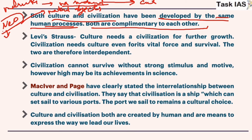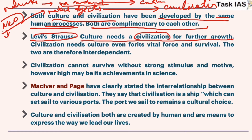According to Levi-Strauss, culture needs civilization for further growth, because civilizational structures like temples, gurudwaras, and masjids provide socialization centers from where cultural ideas, norms, and values are transferred. Conversely, civilization needs culture for its vital force and survival — it is different values and beliefs that lead to the development of civilization. If someone has faith in religious beliefs, then temples or religious literature will be produced. These two are therefore interdependent.